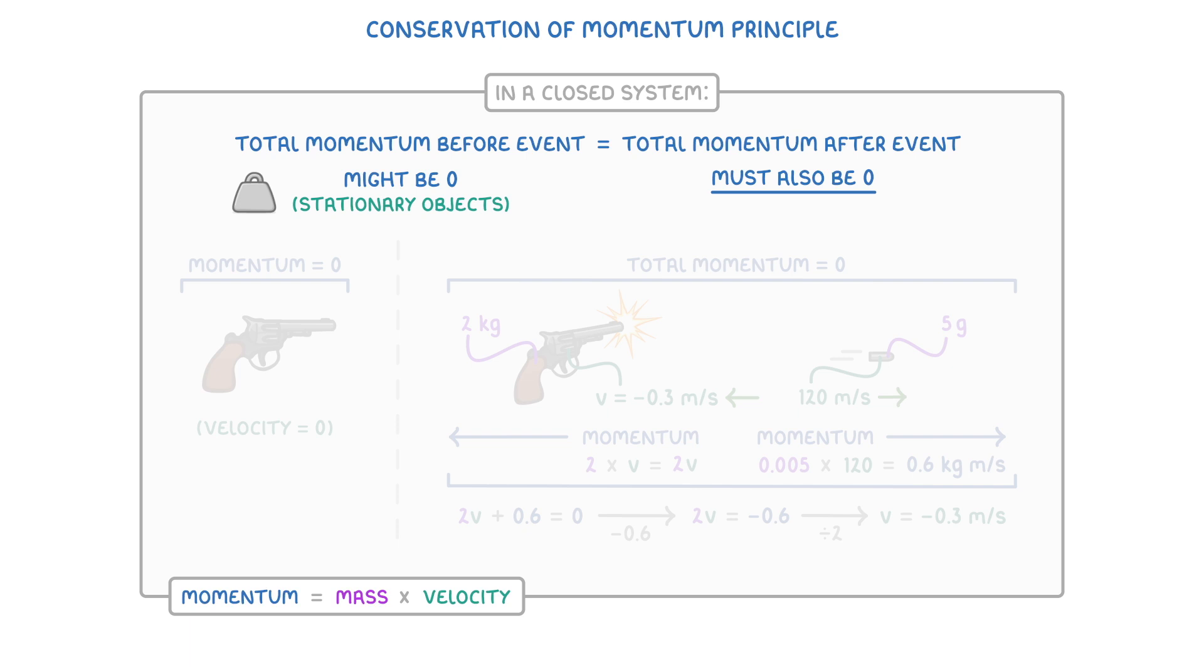The one thing we haven't mentioned yet is that you need to know that the letter symbol for momentum is rho, which looks like a P. So the momentum equation can also be written as P equals MV.